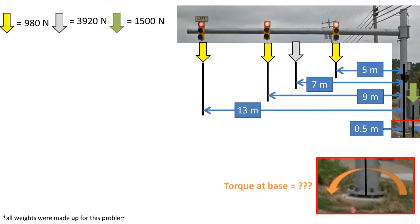Now there is a box on the opposite side that has a weight of 1500 newtons and is 0.5 meters away from the center of the base.